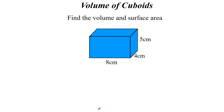Welcome to highschoolmaths.co.uk. Today we're going to be looking at how to find the volume of some basic three-dimensional shapes and then some composite or compound shapes. We're going to start off nice and simple with the volume of a cuboid. It's basically the three-dimensional version of finding the area of a rectangle, so the volume V is equal to the length times the breadth times the height.